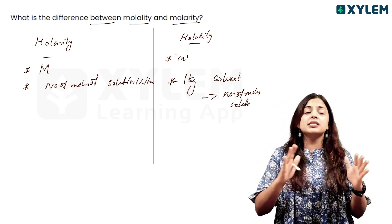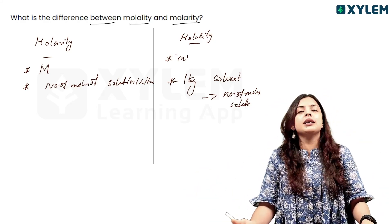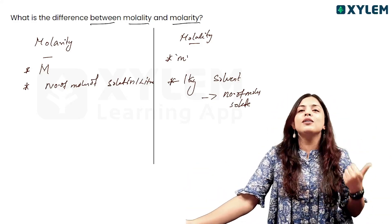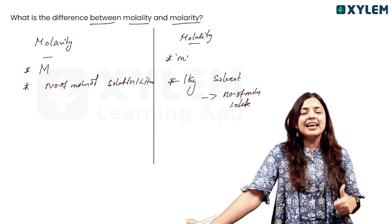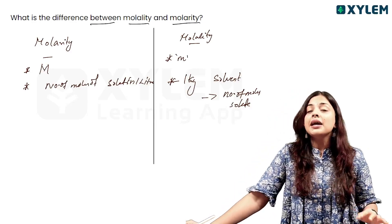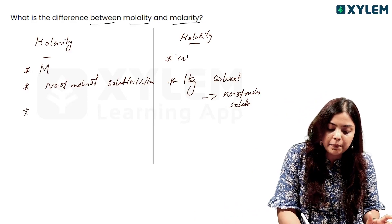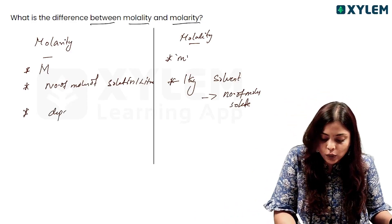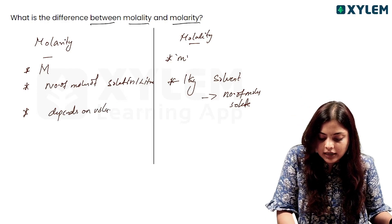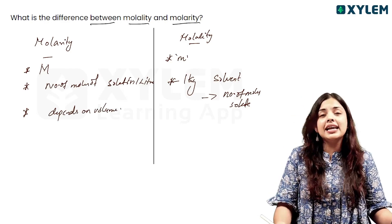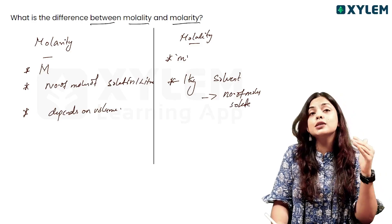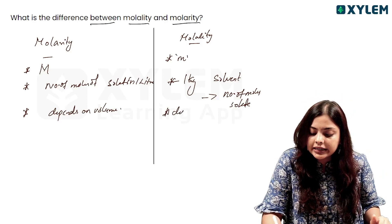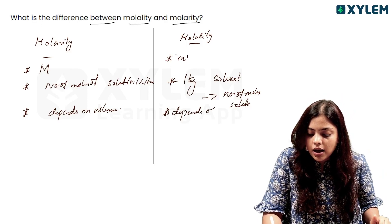The basic huge difference: molarity is the number of moles of solute per one liter of solution, whereas molality is the number of moles of solute per one kilogram of solvent. Molarity depends on volume, and molality is the number of moles of solute divided by mass of solvent — it depends on mass.